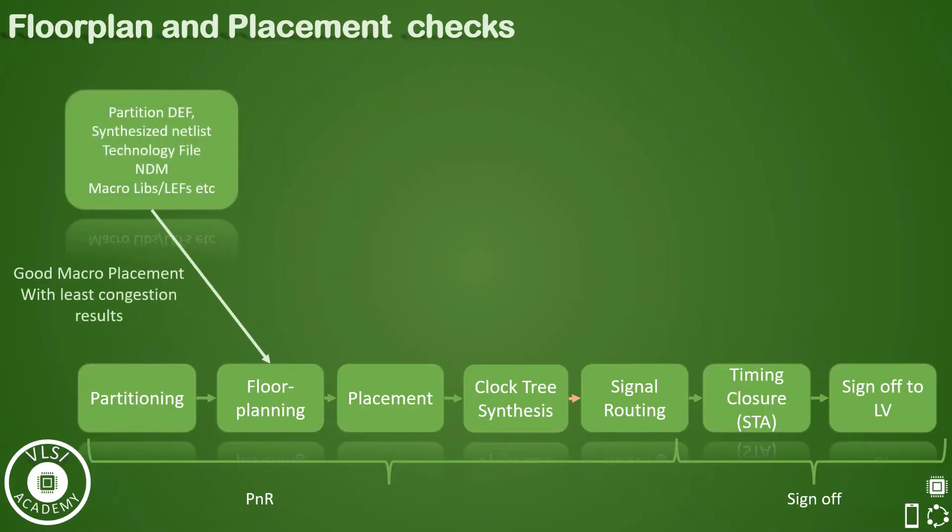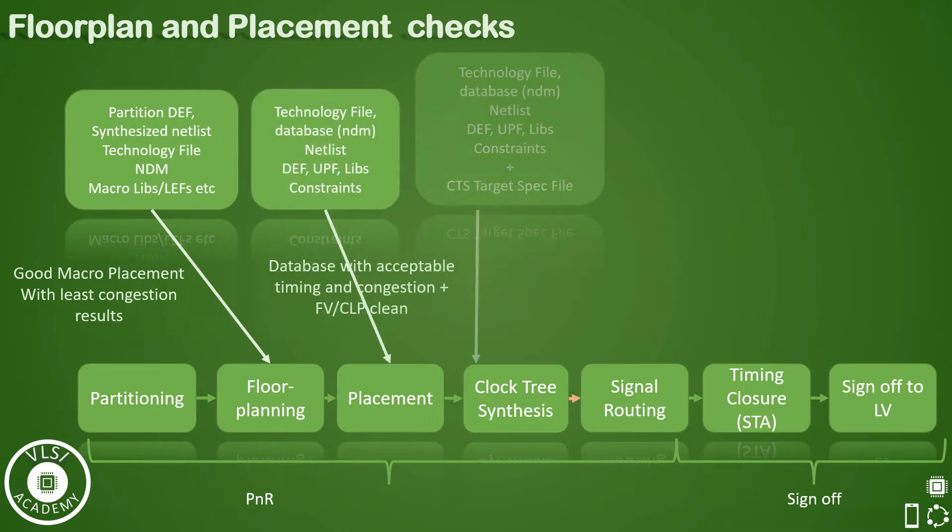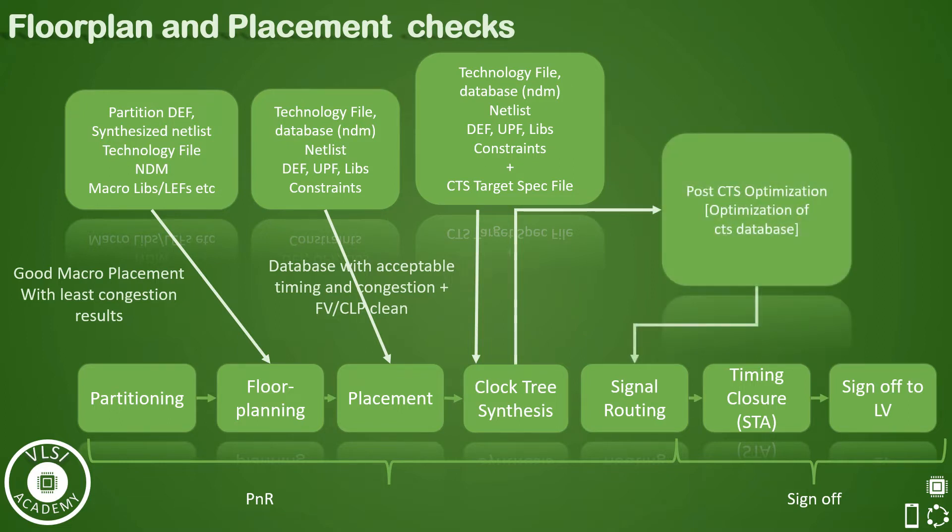You must have seen this slide already and in this slide we have discussed about floor planning, placement, and CTS stage inputs and the bare minimum requirements that are needed to qualify this particular stage. We have also seen that after CTS we do the post CTS optimization and then signal routing is the stage which we are discussing right now.